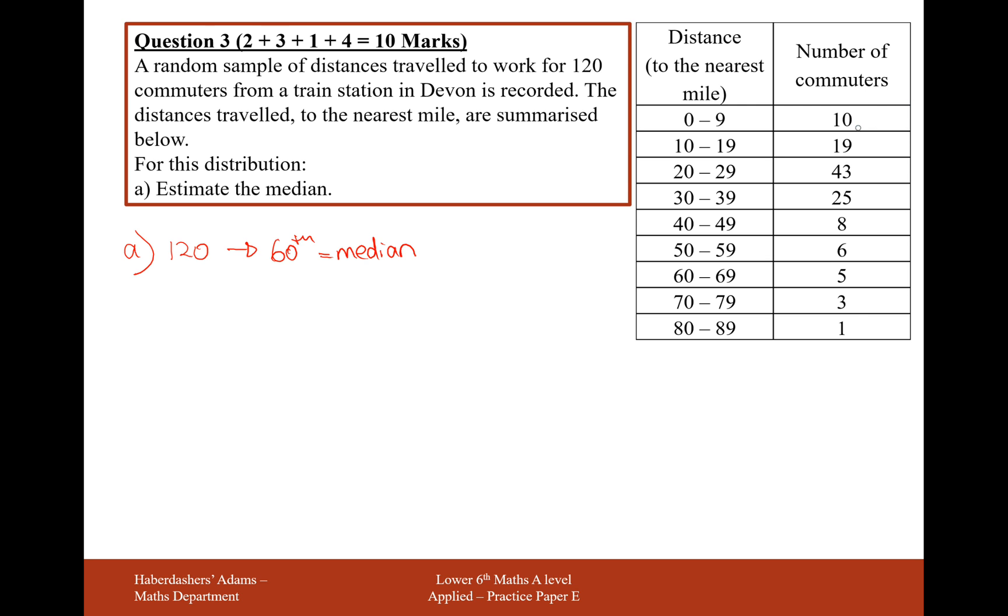Now, we need to work through the groups to see which group this 60th person is going to be in. We have 10 people in this group, we're up to 29 people in this group from 11 up to the 29th person. What we're going to want next is to add on this 43, so that's going to be 72. So we have 72 people that are up to 29 miles to the nearest mile. So what we want is the 60th person in this group.